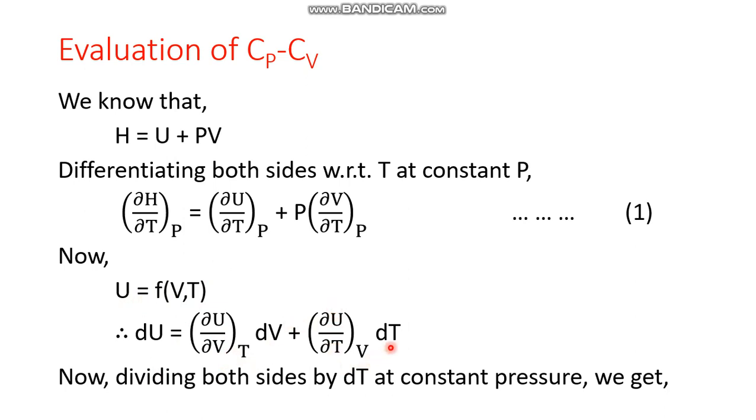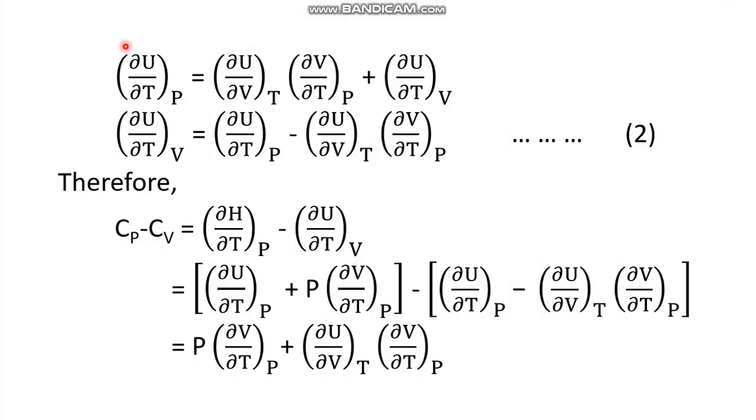Now let's divide both sides by dT and attribute the condition of constancy of pressure. If we attribute the condition of constancy of pressure, then this dU by dT expression becomes del U by del T at constant P. Here also it becomes del V by del T, and here dT is cancelled out. In this line, you can see this dU by dT expression becomes del U by del T at constant P. This dV by dT expression becomes del V by del T at constant P. This one was as usual, and here the dT is cancelled out.